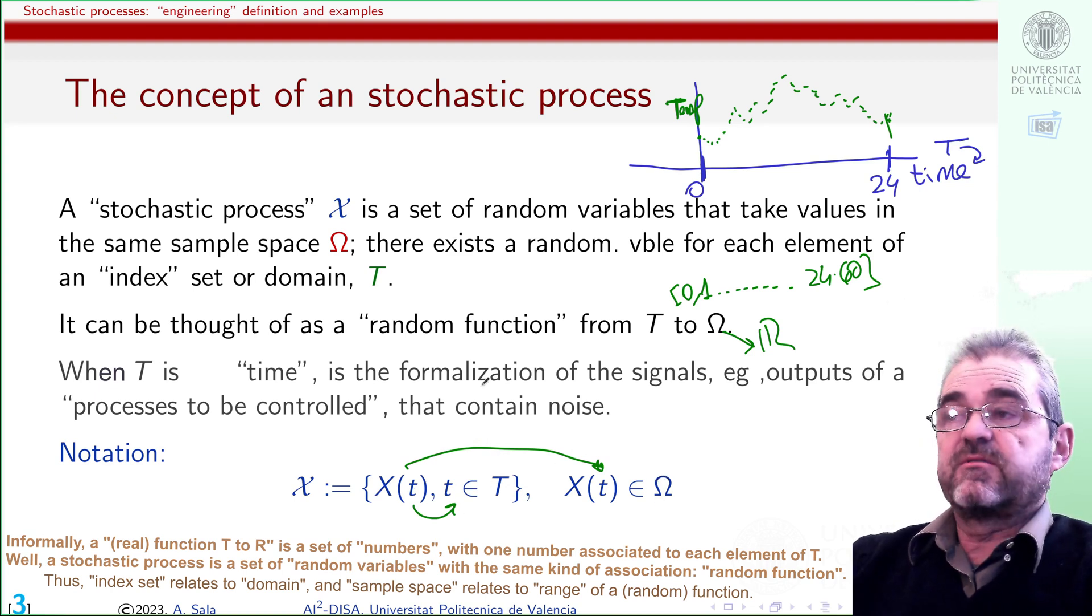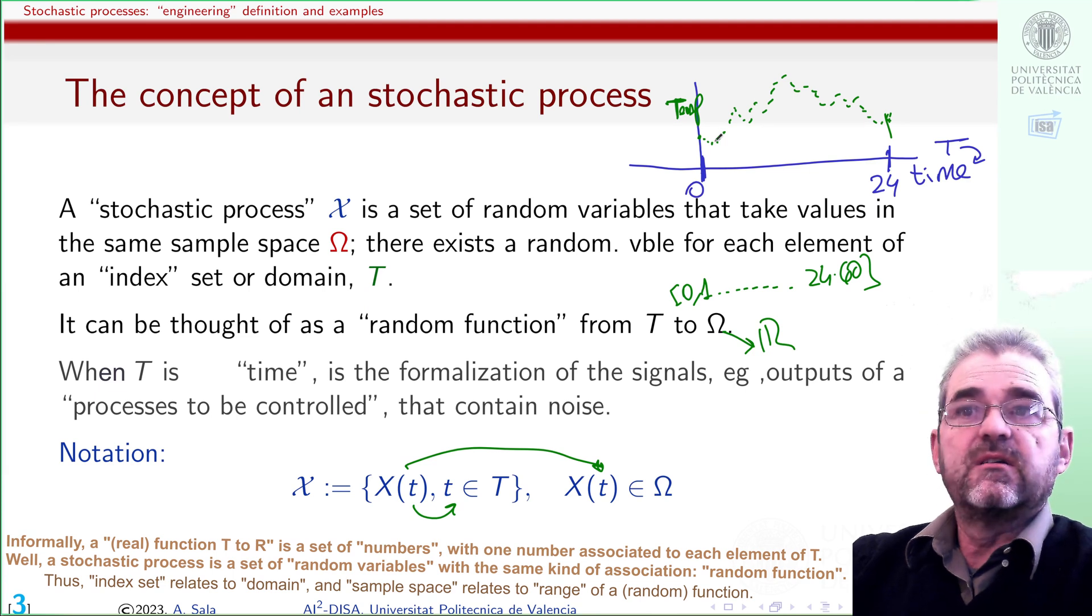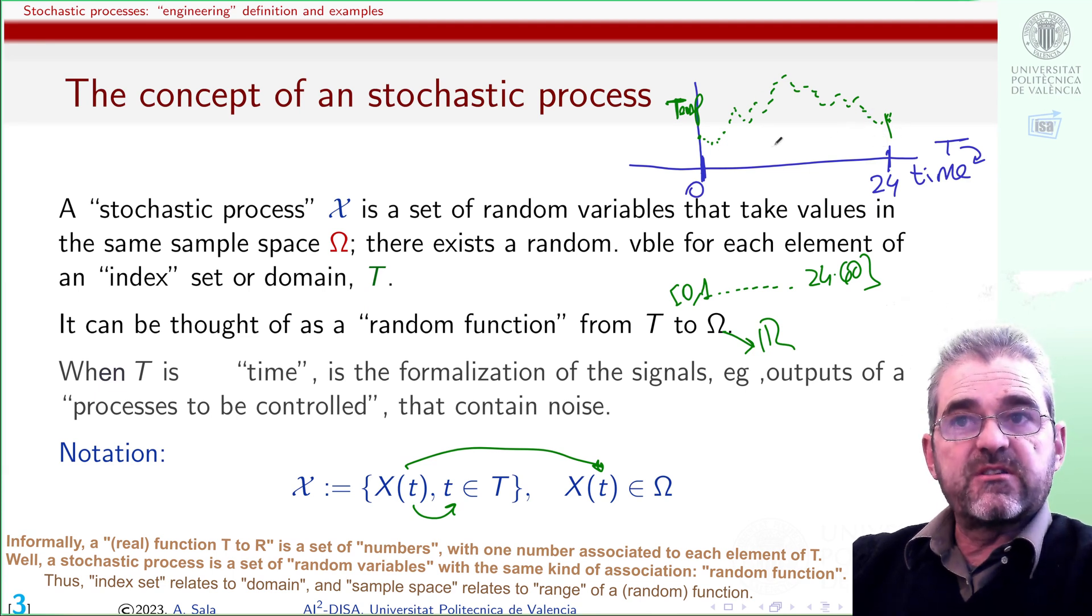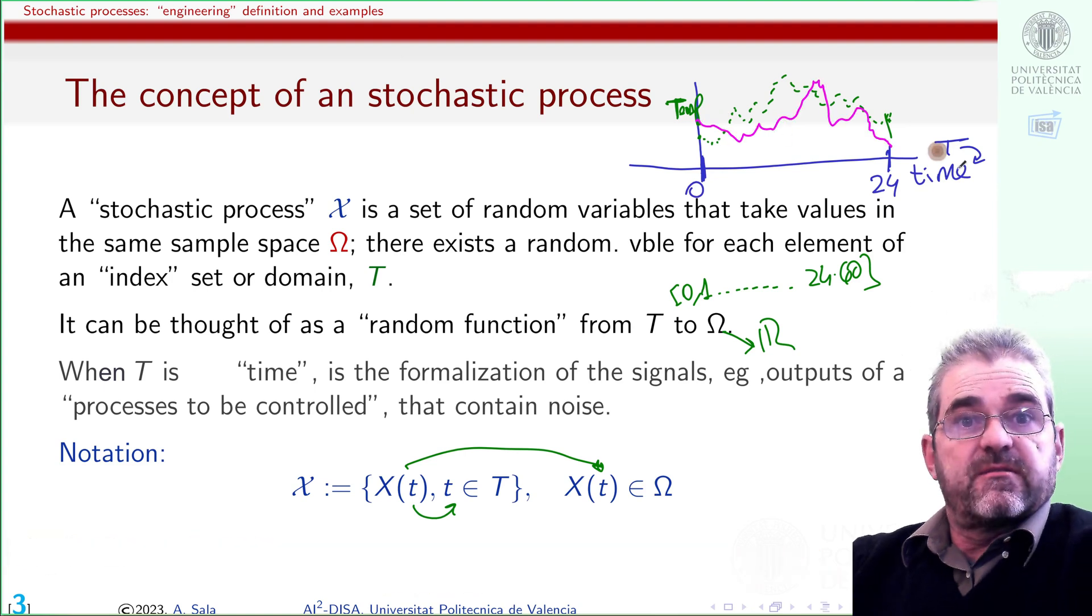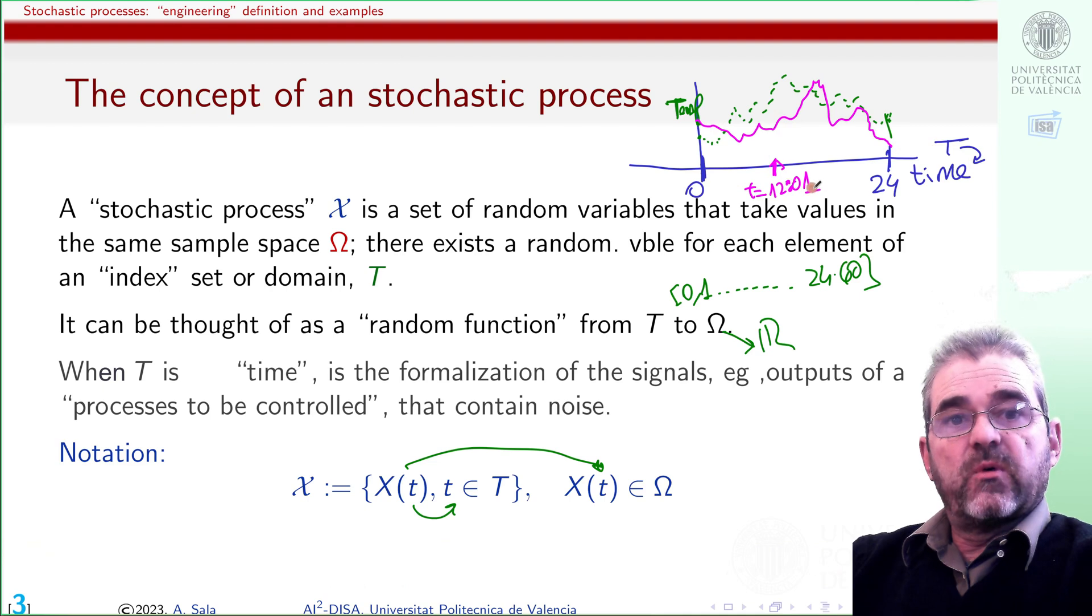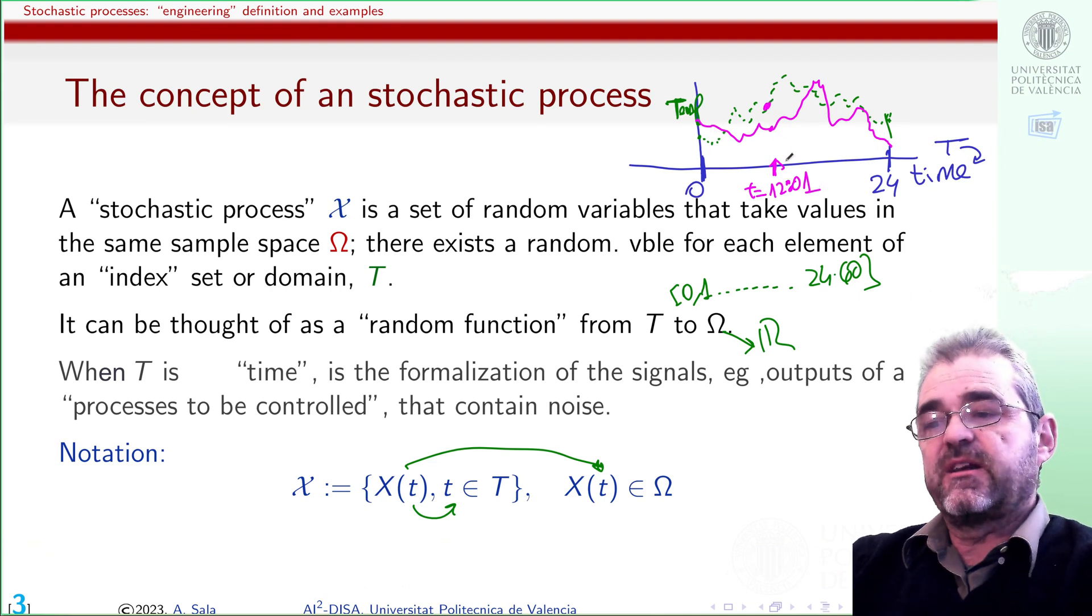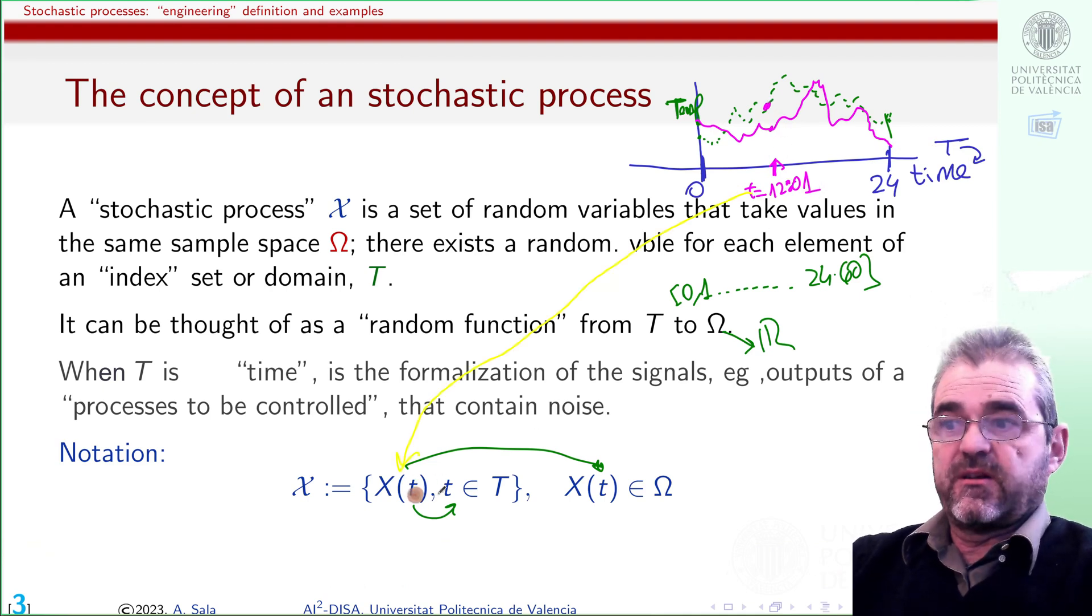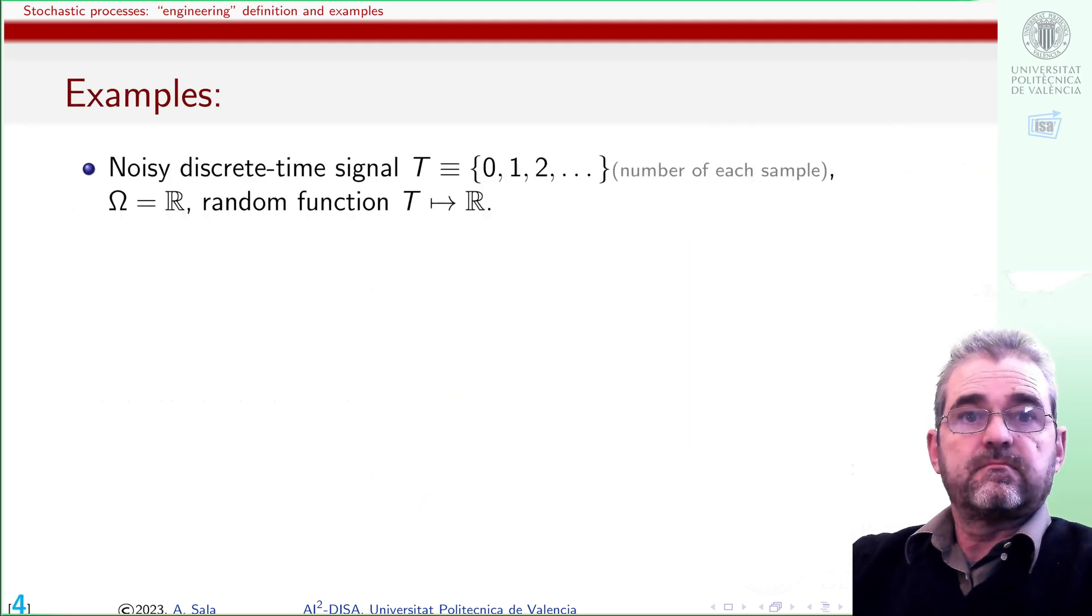It's a random function in the sense that maybe today I have this temperature reading, but maybe next week I have this other temperature reading. At 12:01, temperature is a random variable, and there is one random variable for each time instant.